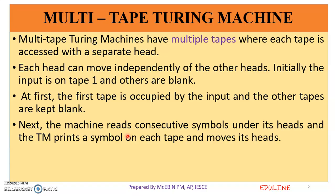The first question is multi-tape Turing Machine. That is a variance of Turing Machines. Turing Machines have different variations. Multi-tape Turing Machine is one variation. Multi-head Turing Machine is another variation.